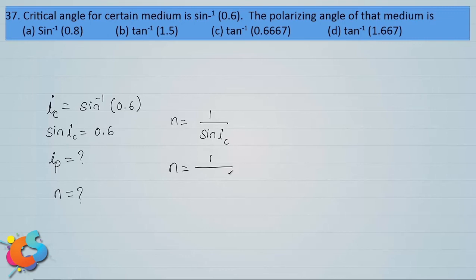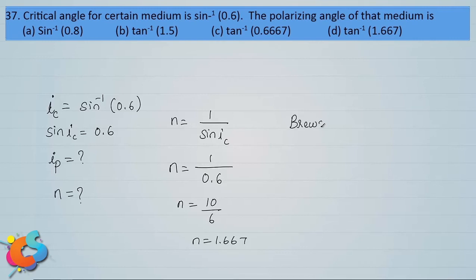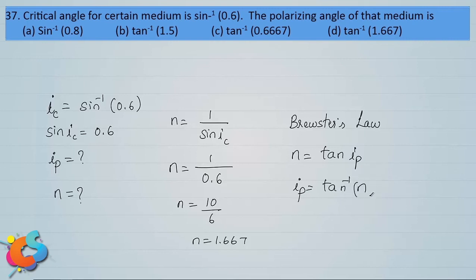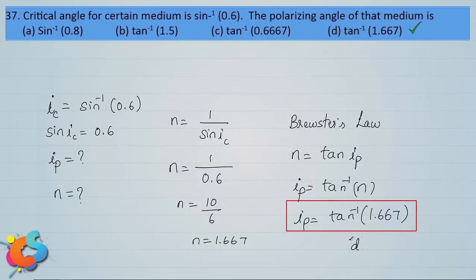The refractive index n = 1/0.6 = 1.667. Using Brewster's law, n = tan(ip), so the polarizing angle ip = tan inverse of n = tan inverse of 1.667. Looking at the options, option d is the correct answer.